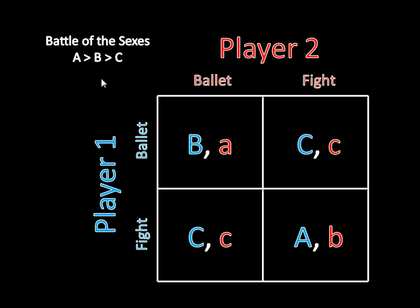I've noted that A is greater than B is greater than C. This applies to both players, whether we're talking about Player 1's capital A, capital B, and capital C, or Player 2's lowercase a, lowercase b, and lowercase c. The reason I have capitals for Player 1 and lowercase for Player 2 is to signify that these numbers don't have to be the same for both players. This big A could be 4 for Player 1 but 2 for Player 2. The important feature, though, is that the ordering is the same for both players: A is greater than B is greater than C.